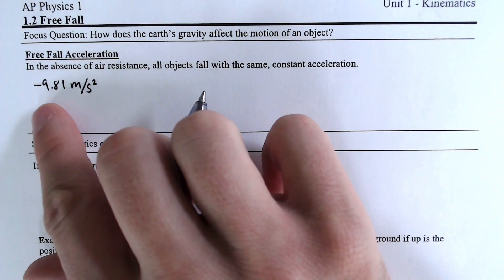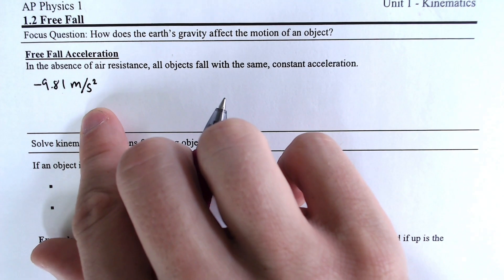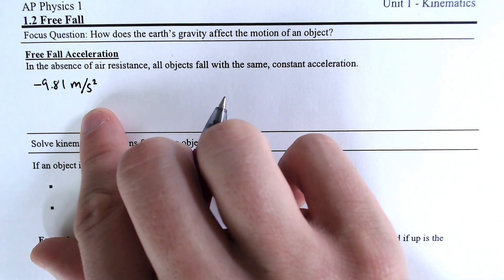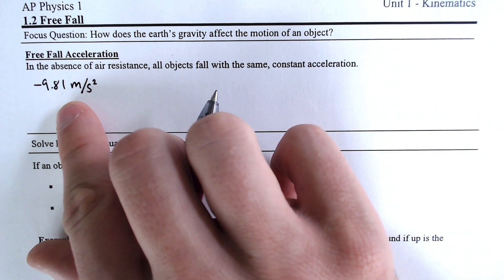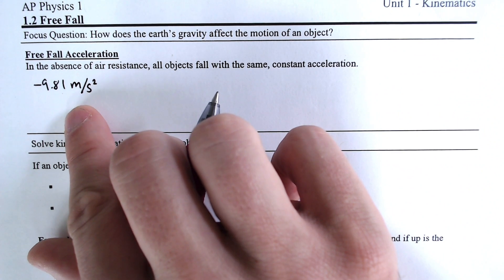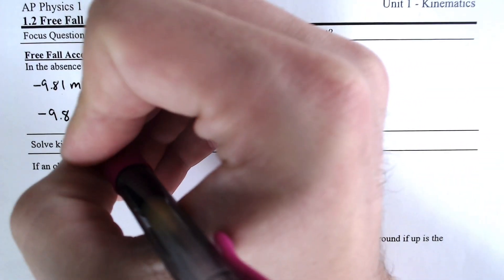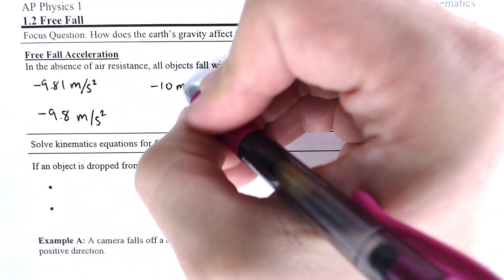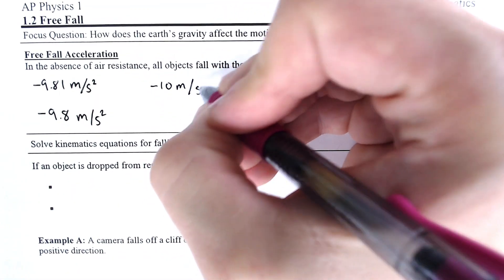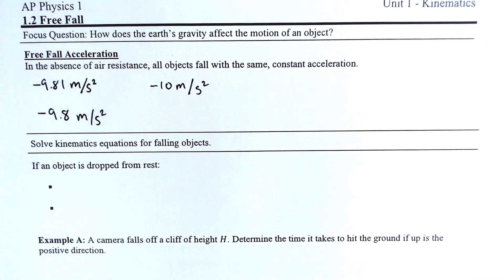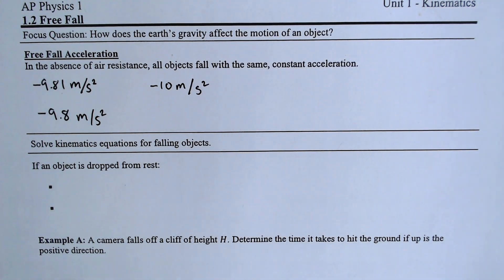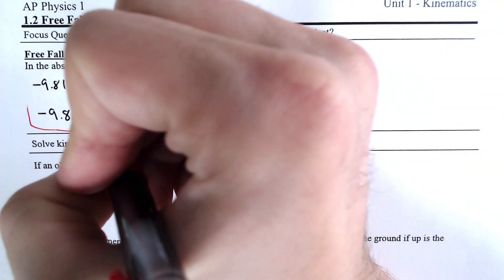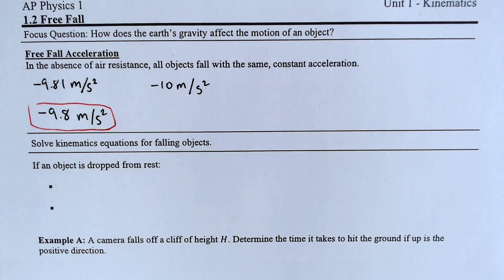Now, that value is still approximated and it changes based on where you are on the planet, but for AP Physics you would typically use just 9.8 meters per second squared, and you'll even see some using just 10 meters per second squared. I will typically be using negative 9.8 — 9.81 is just a little too exact for me.